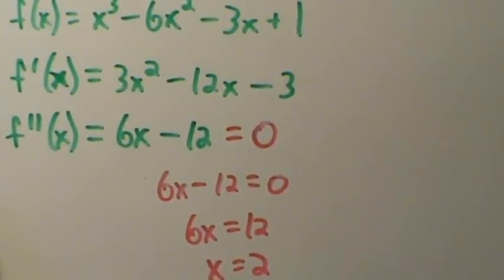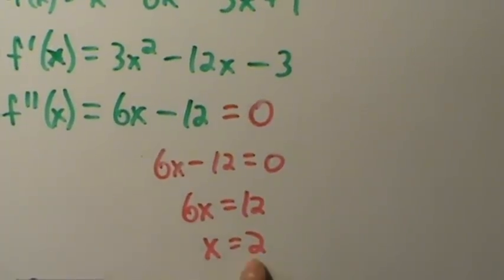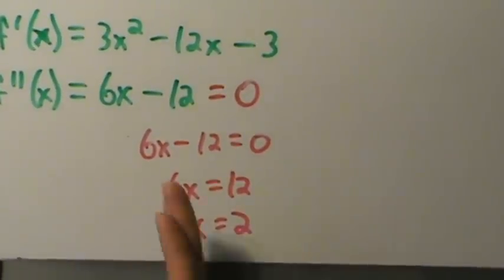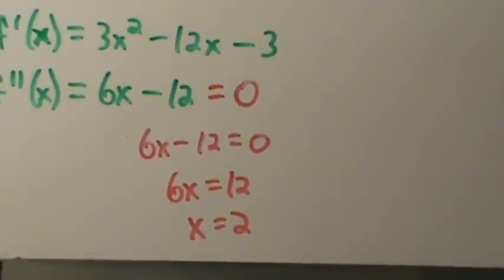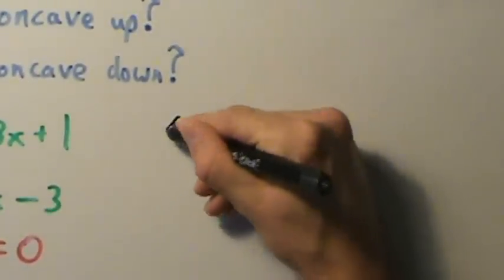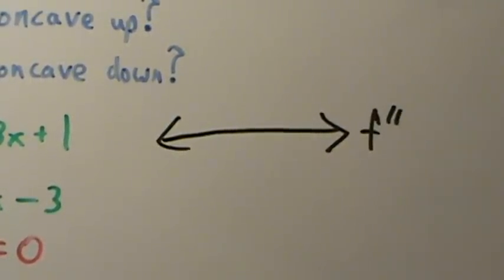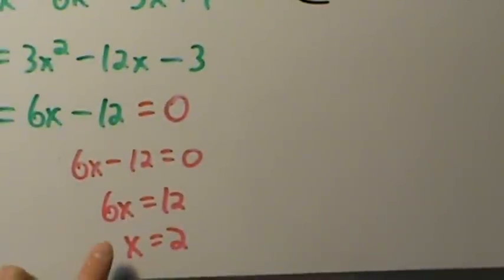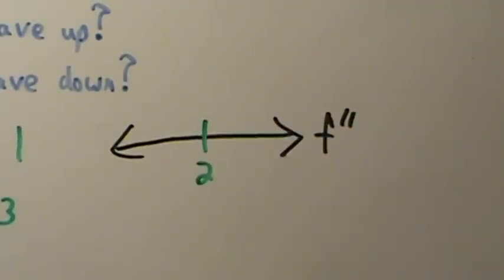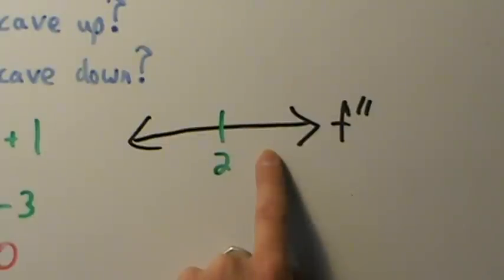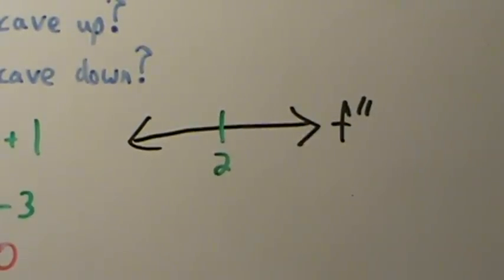The next step is identical to increasing/decreasing functions — we set up a sign chart. Label it f double prime and place x = 2 on the chart. Just like before, we pick one test value from (-∞, 2) and one from (2, ∞), then plug them into the second derivative to see whether it's positive or negative.